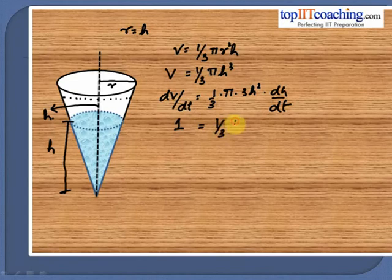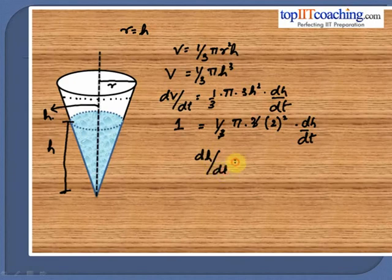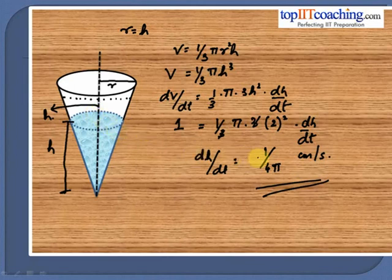Given that dV/dt equals 1 centimeter cube per second, we have to calculate the rate of change in height at the instant when the height is equal to 2 centimeters. Substituting h equals 2, and cancelling the 3s, we get dh/dt equals 1/(4π) centimeters per second. Thus the height of the water level inside the conical funnel is decreasing at the rate of 1/(4π) centimeters per second at the instant when the height is equal to 2 centimeters.